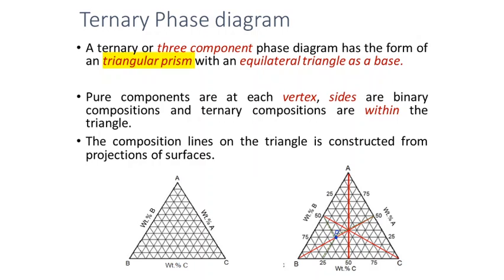We have now discussed the different categories of phase diagram based on the number of components, starting with the unary phase diagram consisting of one component, then moving to the binary phase diagram. The classifications of binary phase diagrams are the isomorphous diagram and the eutectic diagram. Within the eutectic diagram there are two further classifications based on solubility in the solid state: one having limited solubility, and the second having no solubility in the solid state.